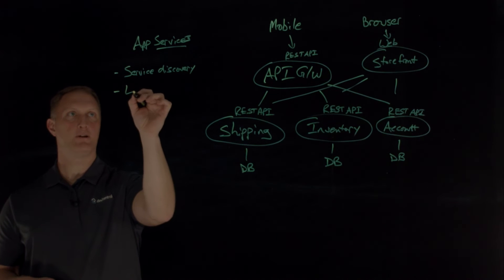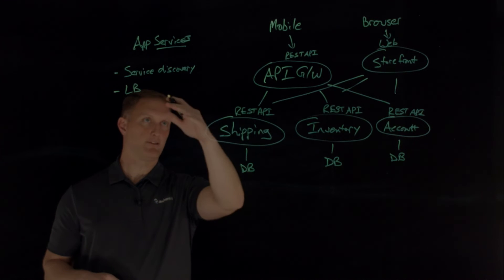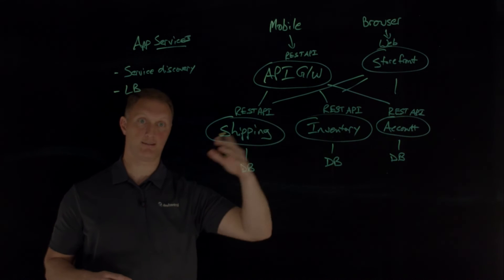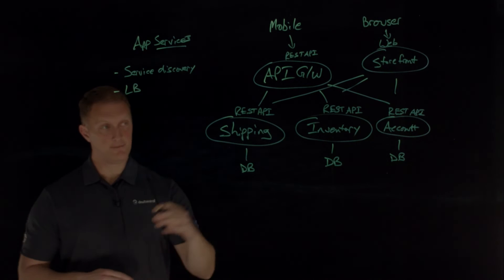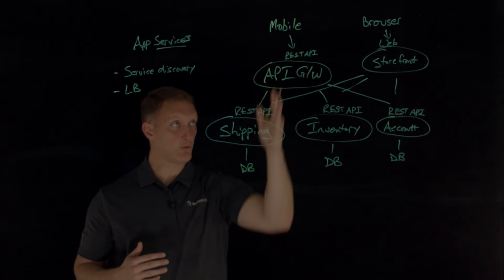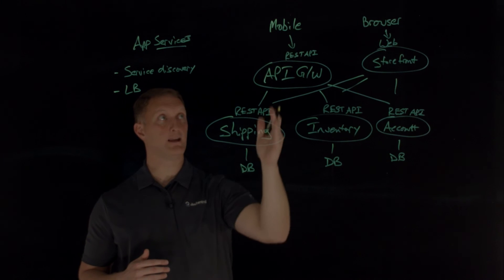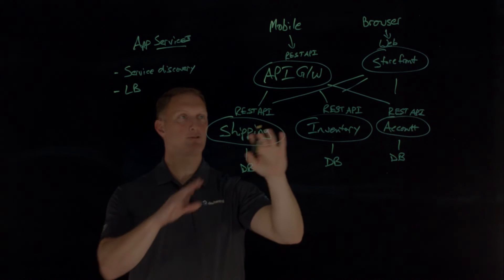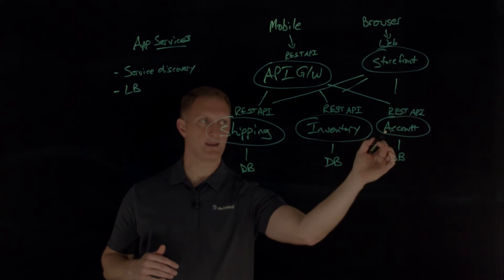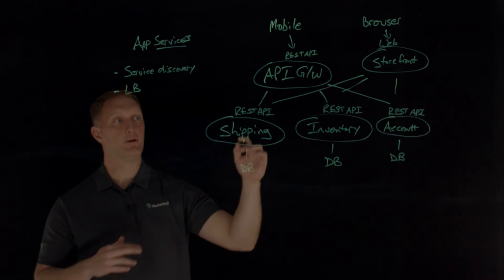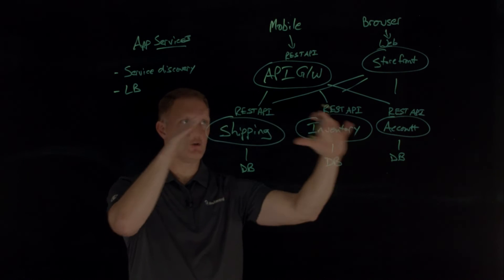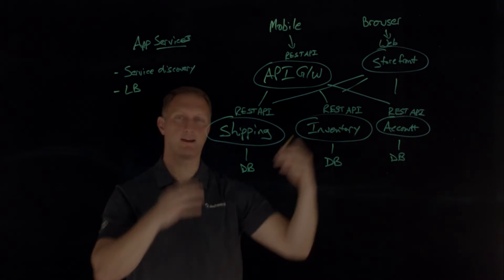Another application service is load balancing. These types of microservices applications tend to generate a large volume of not only North-South traffic — that's traffic coming into the application — but also East-West traffic, which is one service talking to another service. There needs to be an application service that handles load balancing across the application itself.